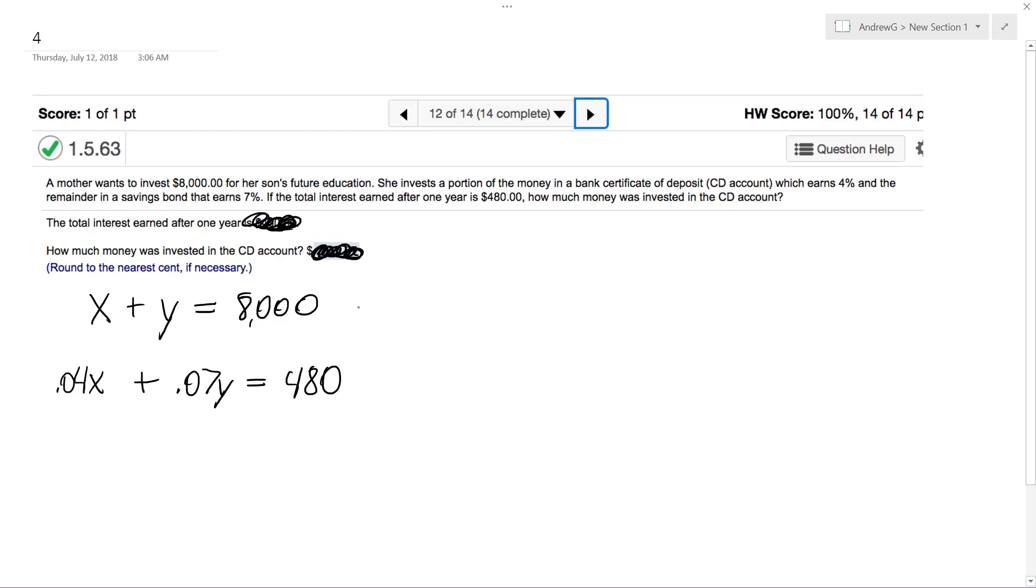We'll just use substitution here, so we'll make Y equal to $8,000 minus X. So we'll have 0.04X plus 0.07 times 8,000 minus X equals 480. We'll have 0.04X plus 0.07 times, like 560 or something.